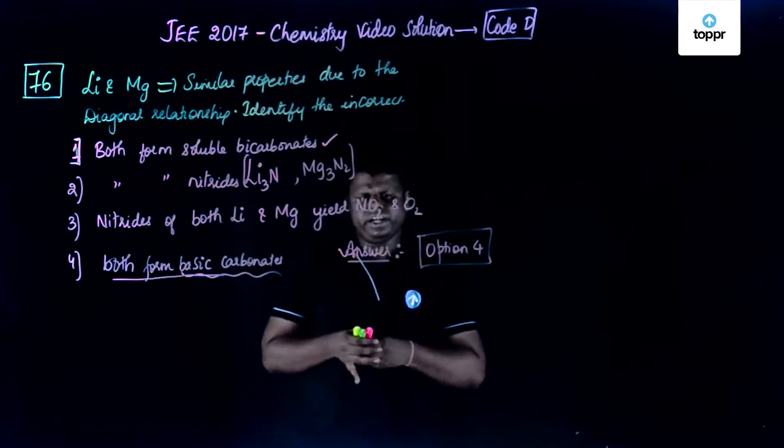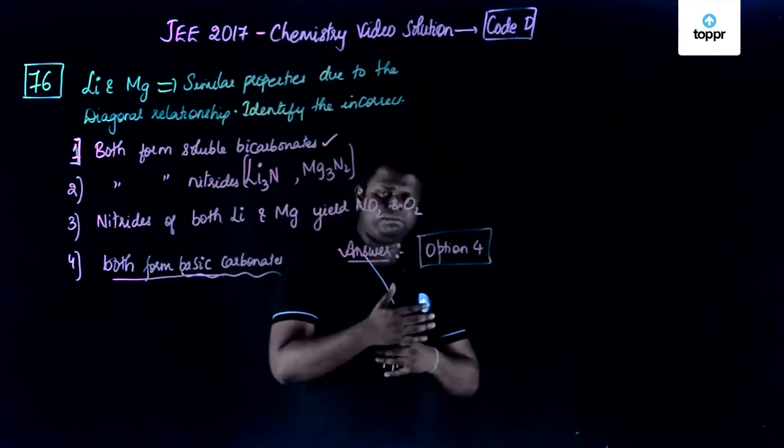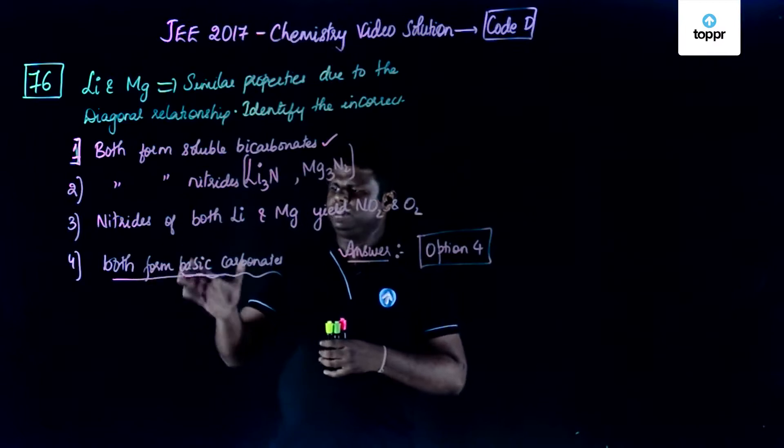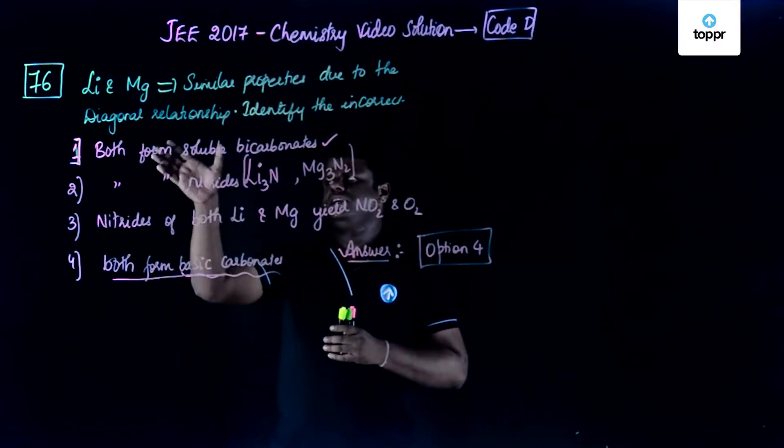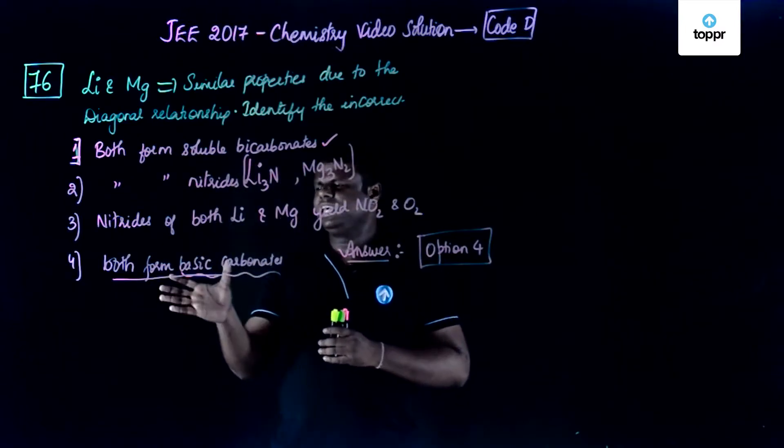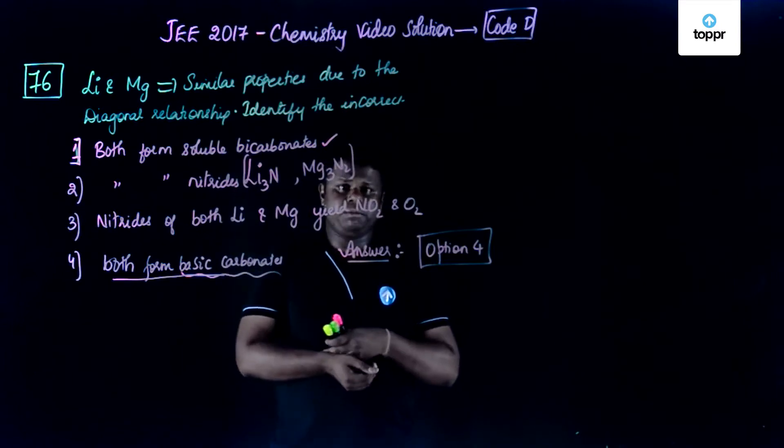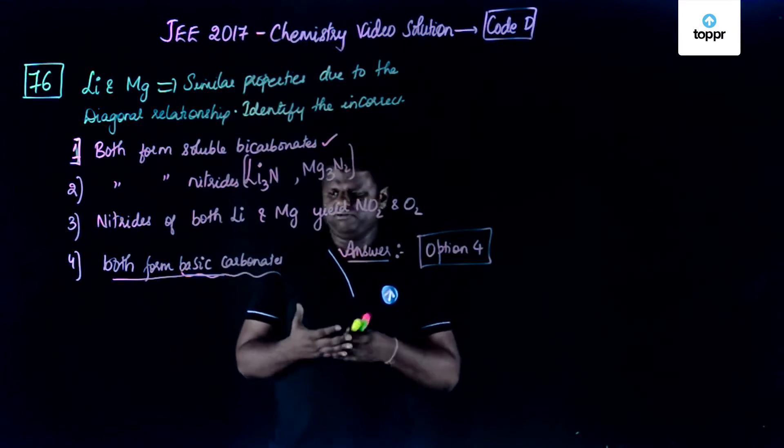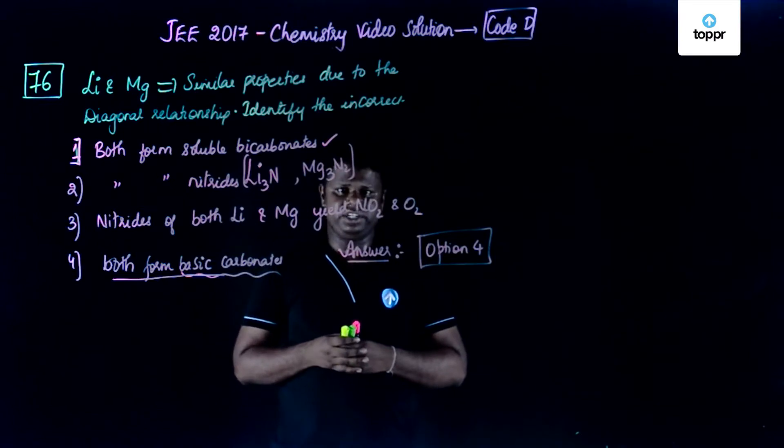Now, the correct answer for this particular question is option number 4. Actually, both lithium and magnesium form soluble bicarbonates, but basic carbonates they are not formed much because of the relative instability.